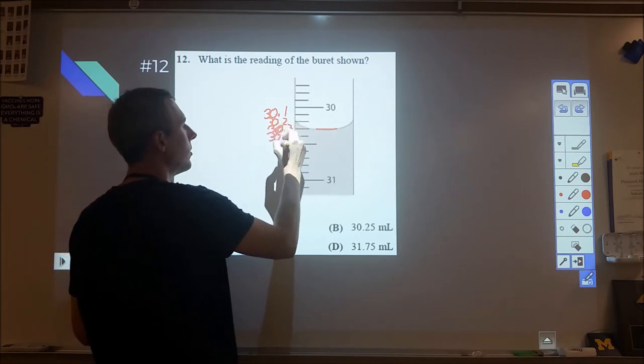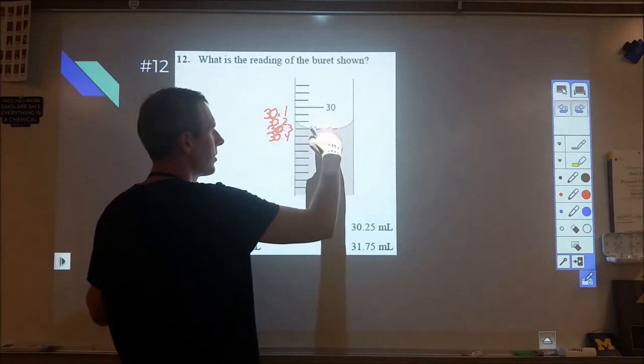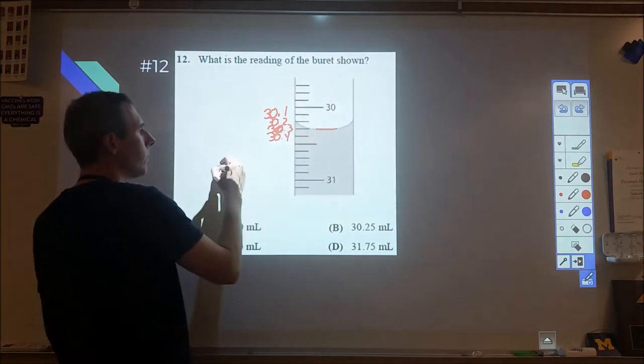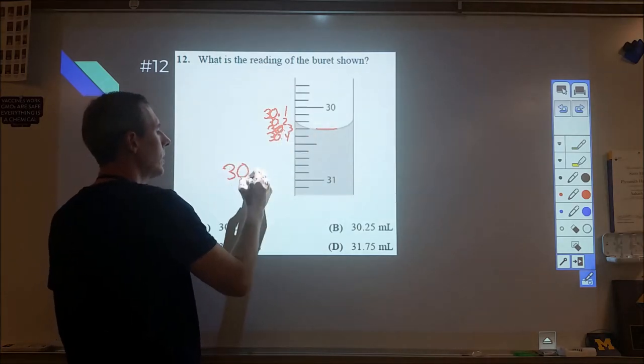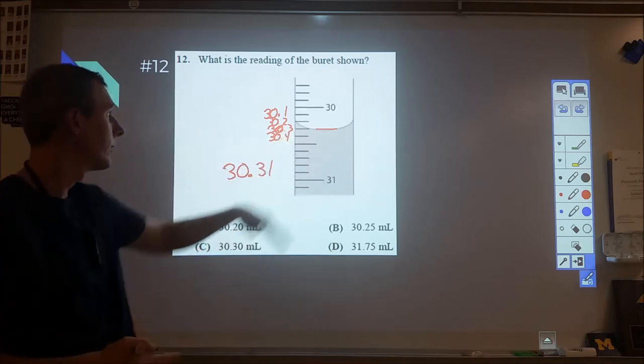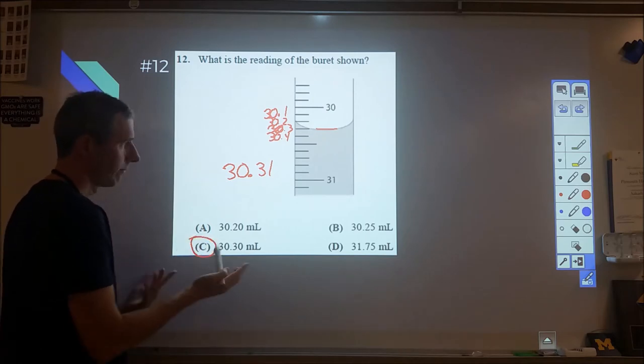The other thing that can throw people sometimes is when it's on a line. So let's pretend it's not on the line, let's pretend it's just a little bit below. So that's between 30.3 and 30.4, therefore it's 30 point 31, right? Well now it's actually on the line and that's 30.30. So that's how we do our measurement for that.